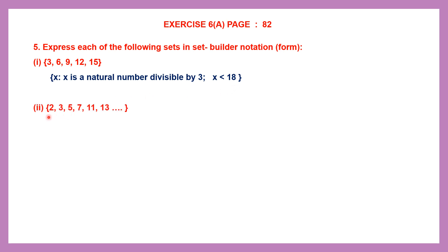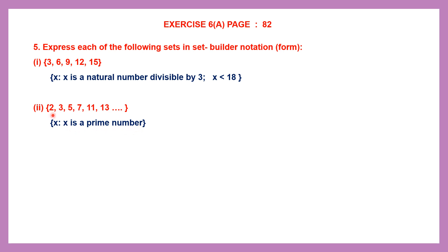Let's look at the next question. Here we have elements like 2, 3, 5, 7, 11, 13 and the dots indicate the numbers are going on endlessly. Now, 2 is an even number and all the other numbers are odd numbers. If you look carefully, you can identify them as prime numbers. So these are all prime numbers. That means x is a prime number and x goes on endlessly, so you don't have to say it's less than or greater than something. We write: x is such that x is a prime number. Remember, 2 is the only even prime number.